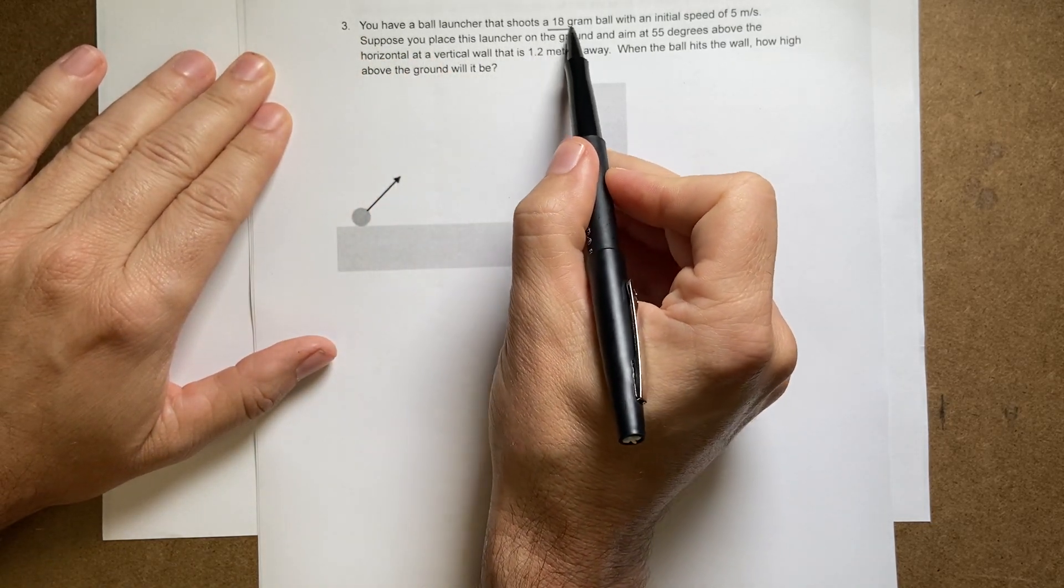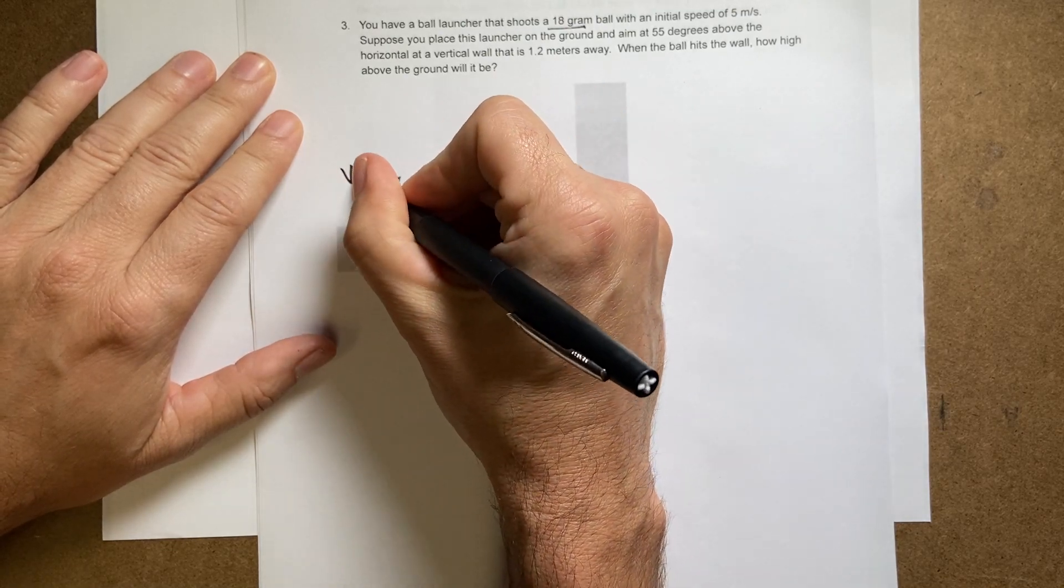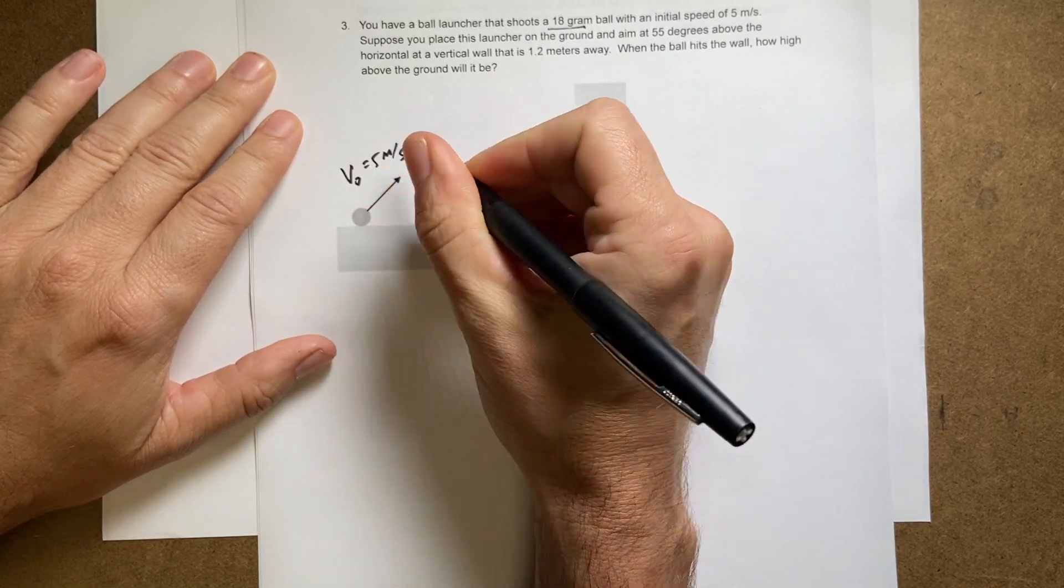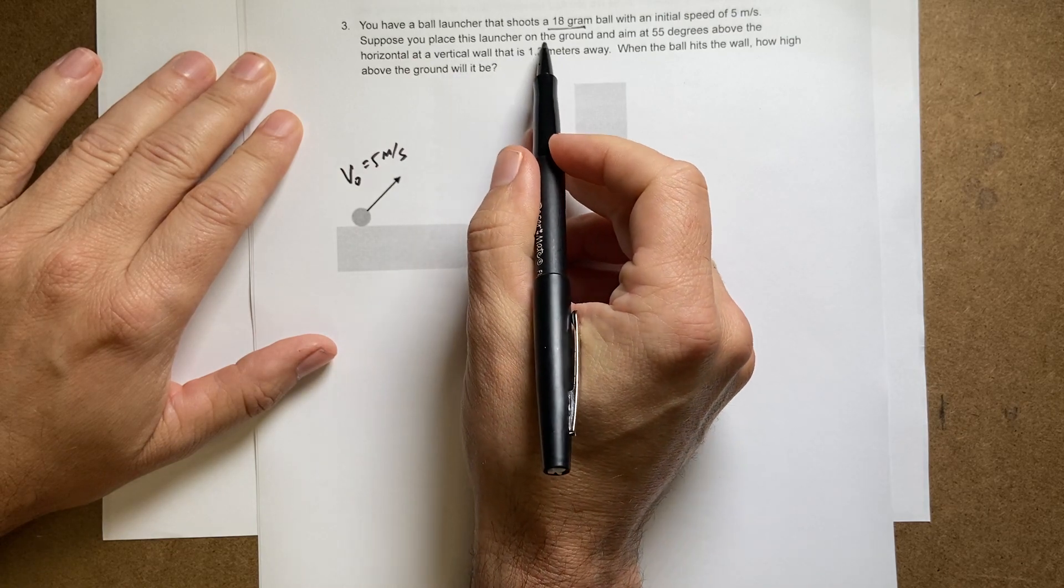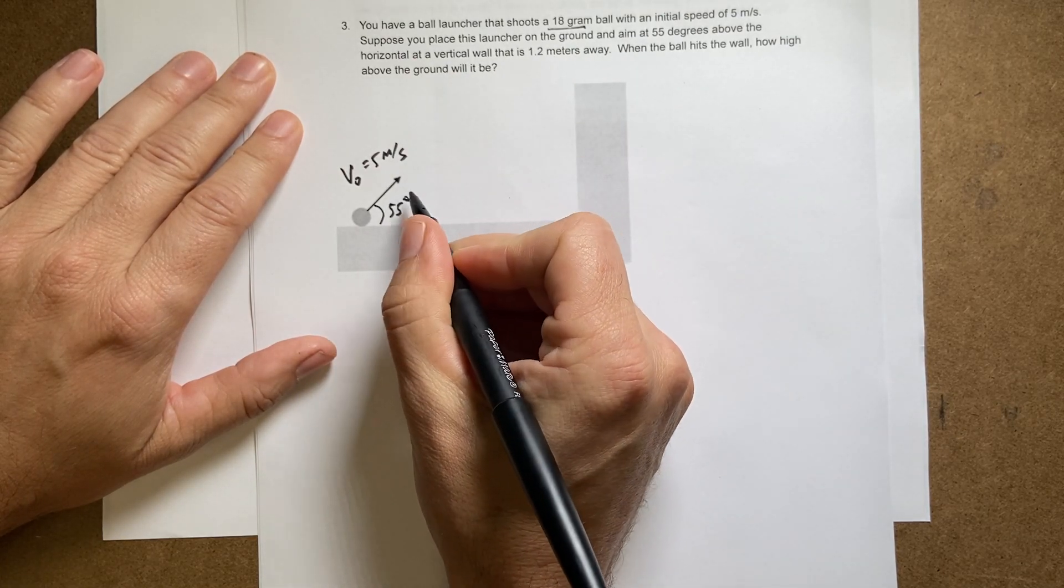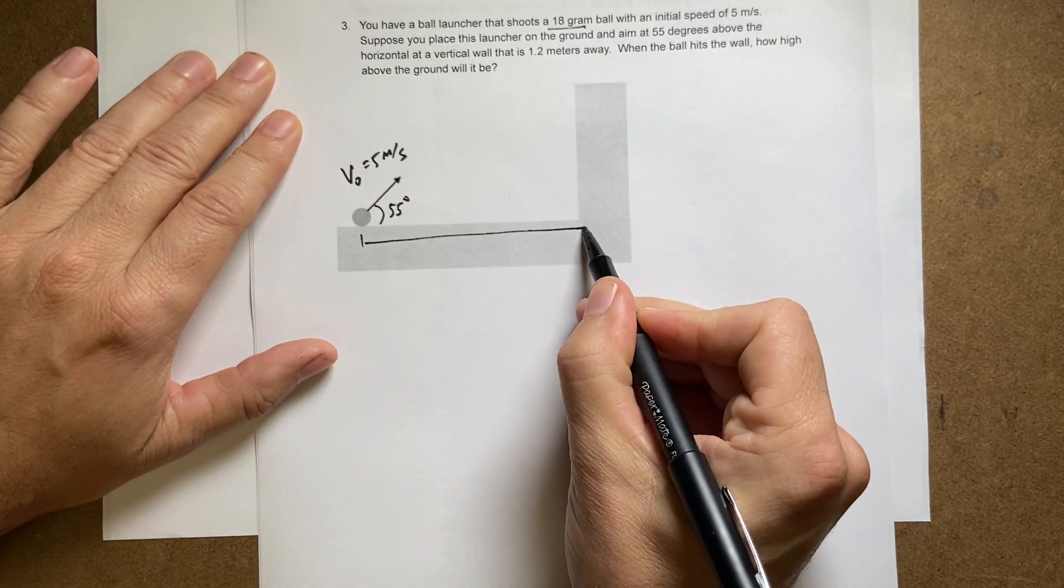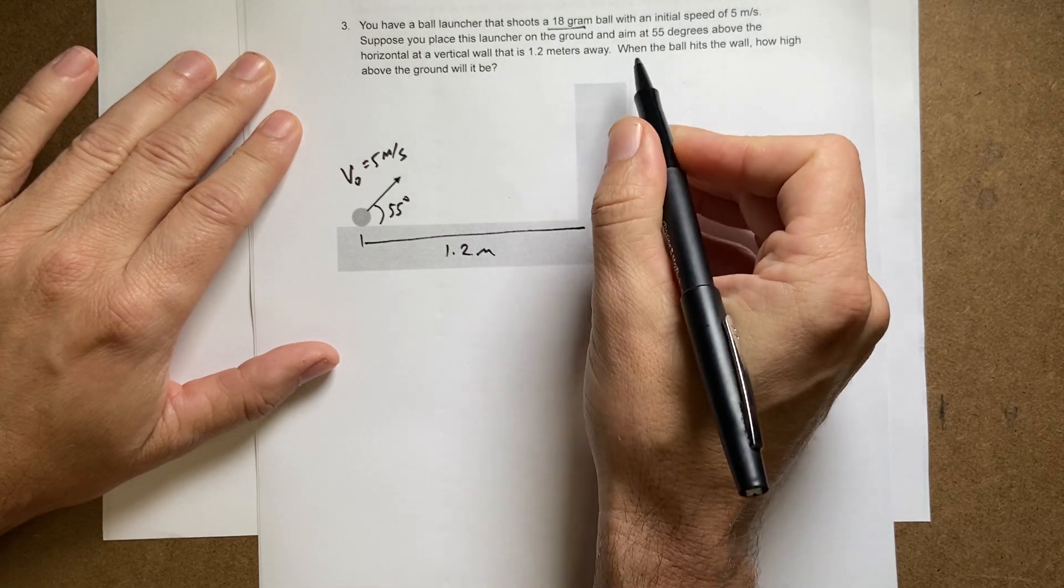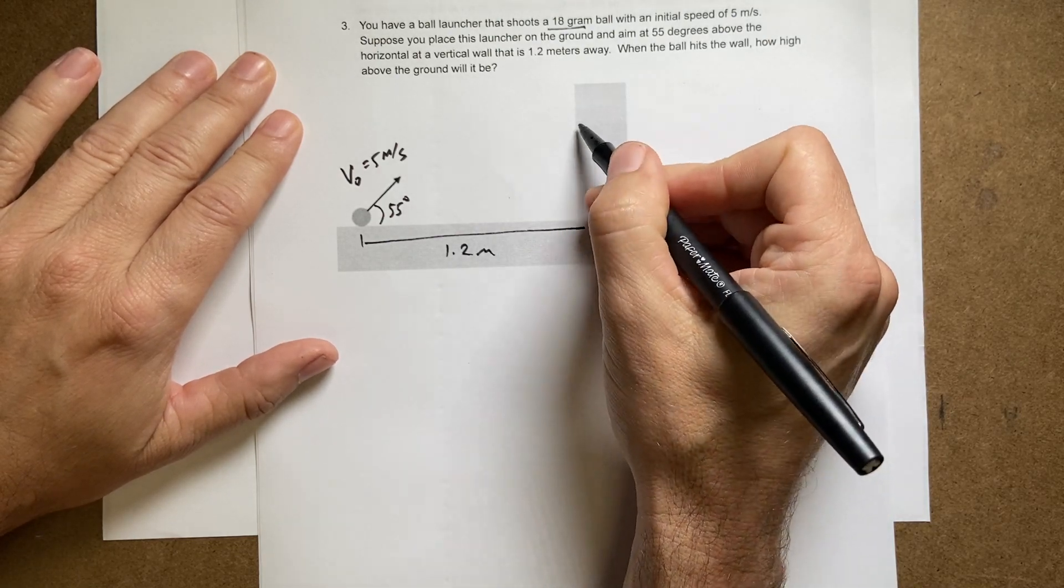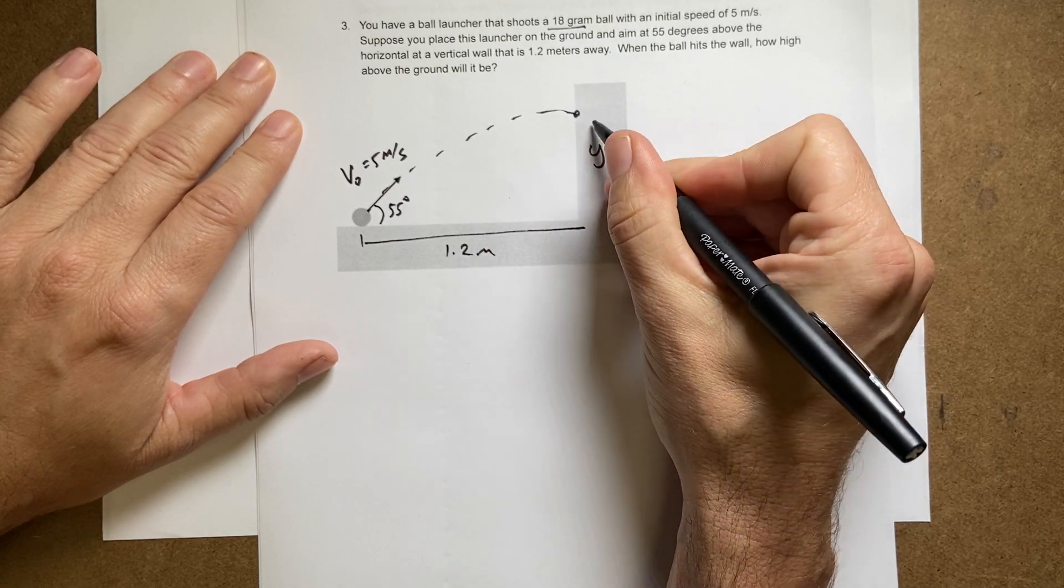Ball launcher that shoots an 18 gram ball with an initial speed of five meters per second. So I'm gonna put that V0 equals five meters per second. Suppose you place a launcher on the ground and aim at 55 degrees above the horizontal and this is 1.2 meters away. When the ball hits the wall how high will it be? So it's gonna go like this and I want to find, let's call that Y2.